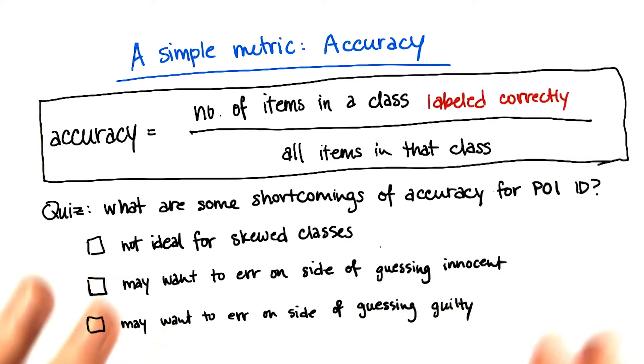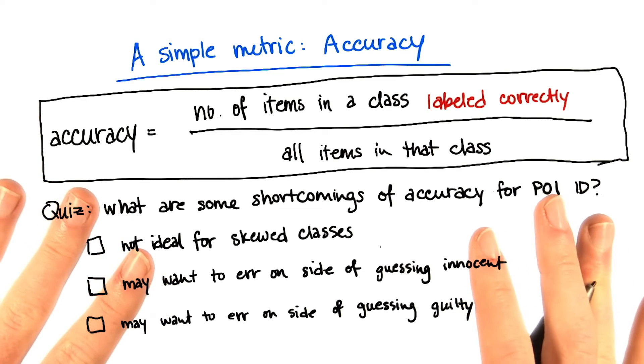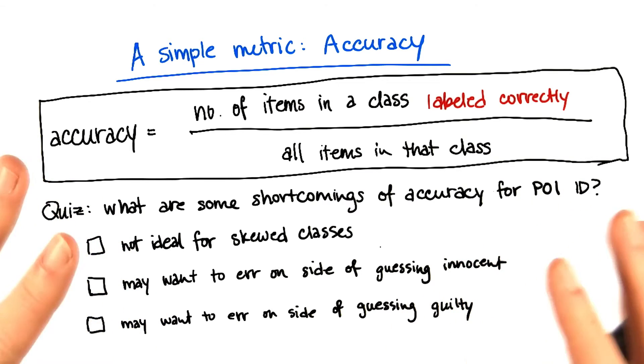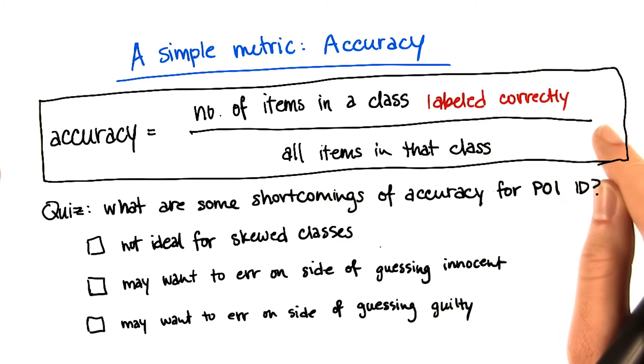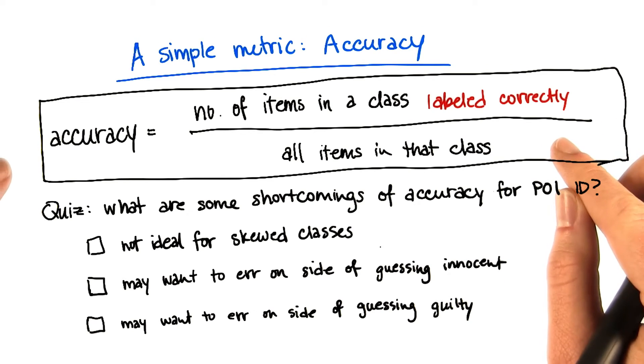In that case, I would say you want to be really sure that someone is involved in the fraud before you risk putting them in jail for a long time. And that if you have any doubt at all, you should err on the side of assuming that they're innocent. That accuracy perhaps might not be particularly tailored to that outcome that you want.